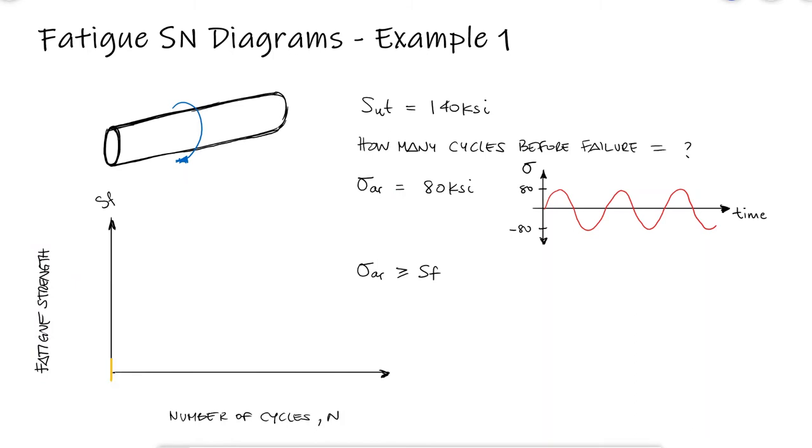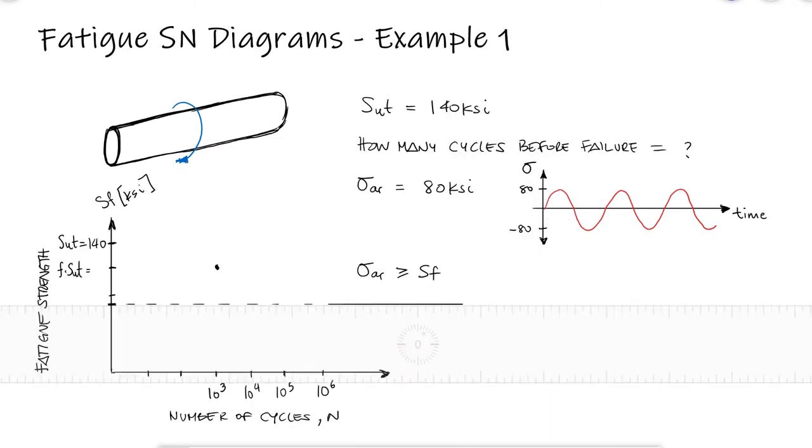We know that for one cycle, that is static loading, the fatigue strength is equal to the ultimate strength. For 1000 cycles, the fatigue is the F coefficient times the ultimate strength, and for 1 million cycles or more, the fatigue strength is what we call the endurance limit.